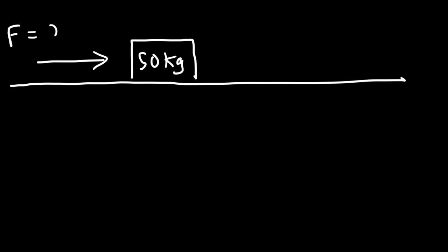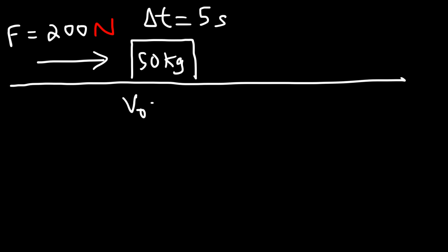Now let's work on an example problem. We have a horizontal frictionless surface with a block of mass 50 kilograms. We apply a force of 200 newtons on this block, and that force is active for only 5 seconds. Before the force acts on the object, the initial velocity is 10 meters per second east.